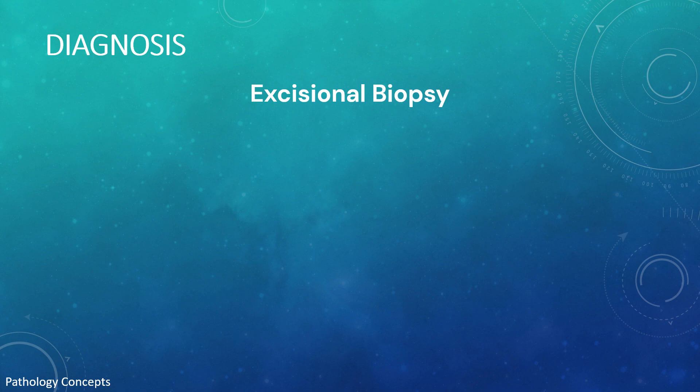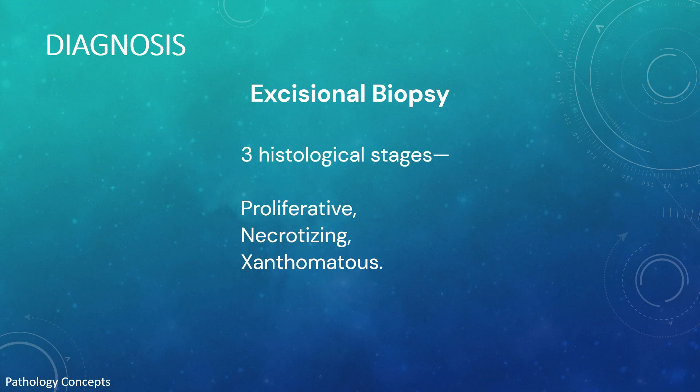The condition is characterized by three histological stages: proliferative, necrotizing, and xanthomatous. During the proliferative phase, there is follicular hyperplasia with infiltrate comprised of histiocytes and lymphocytes with notable absence of neutrophils and eosinophils. In the necrotizing stage, distinctive features include histiocyte nuclear breakdown (karyorrhexis) and multiple necrotic foci, while the overall lymph node architecture remains intact.